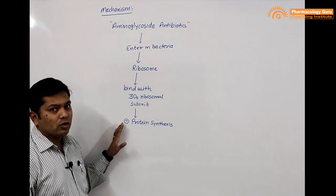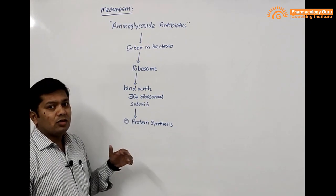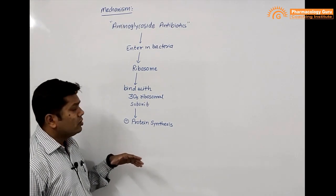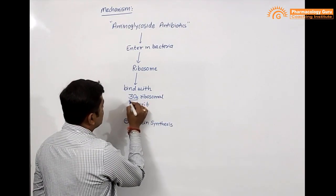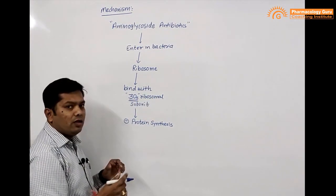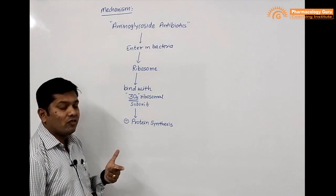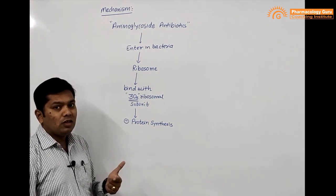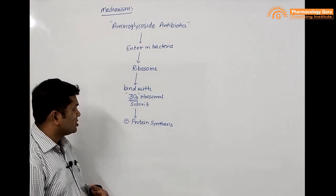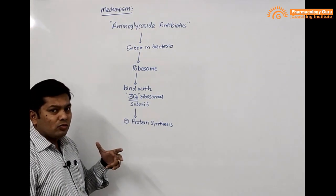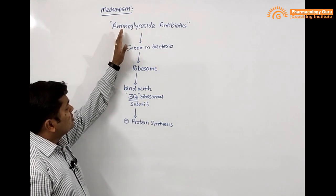Later generation molecules from the aminoglycosides have another action — they can also bind with other ribosomal subunits. Bacterial ribosomes have two subunits: 30s and 50s, while human cells have 40s and 60s. That is why aminoglycoside antibiotics do not affect human cell protein synthesis.